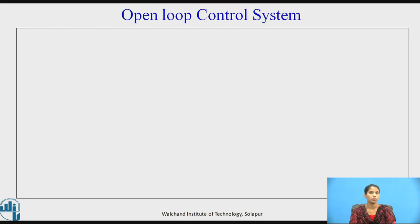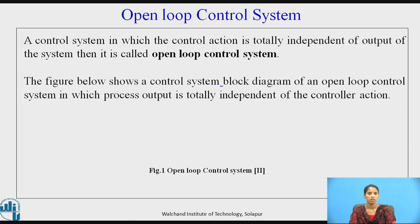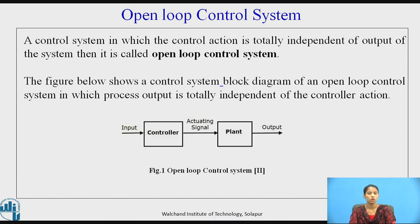Let us see what is an open-loop control system. A control system in which the control action is totally independent of the output is known as an open-loop control system. The figure below shows the open-loop control system. It is a simple process where input has no effect on the output.